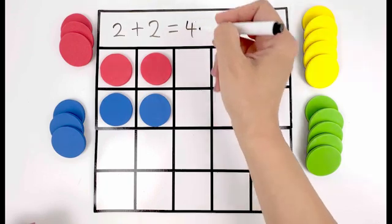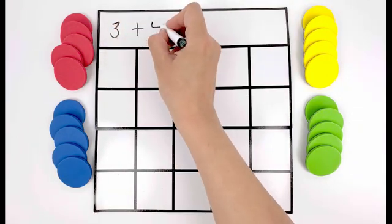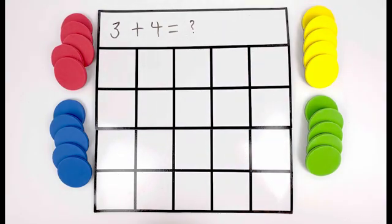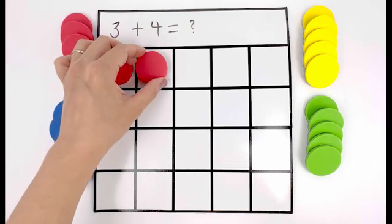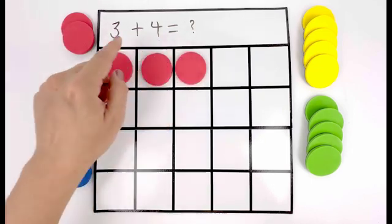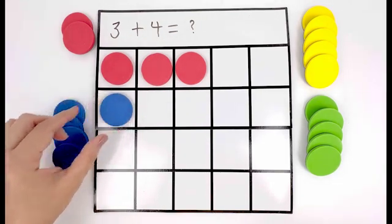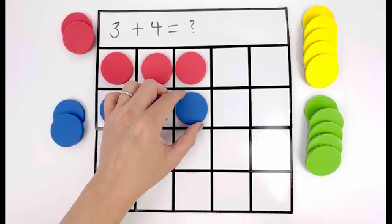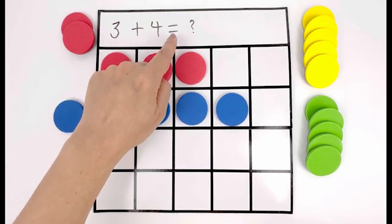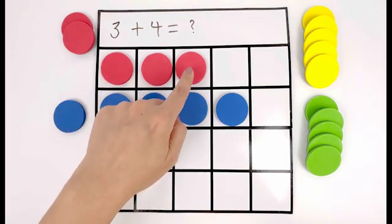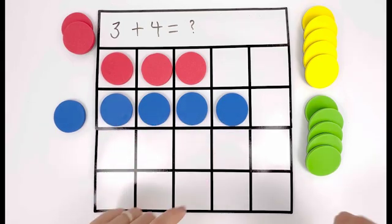This time let's find out what is three plus four. So first I need three circles, one, two, three. It's three plus four. Now I need to add four more circles, one, two, three, four. Three plus four equals one, two, three, four, five, six, seven. It equals seven.